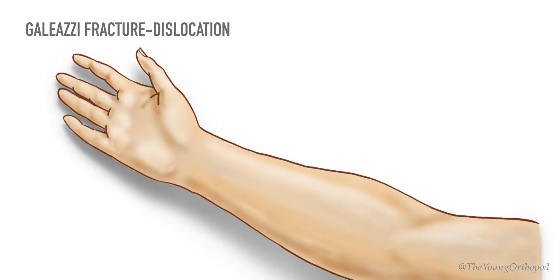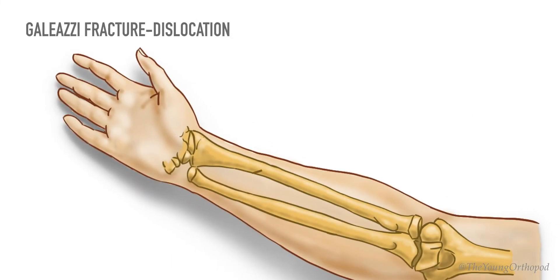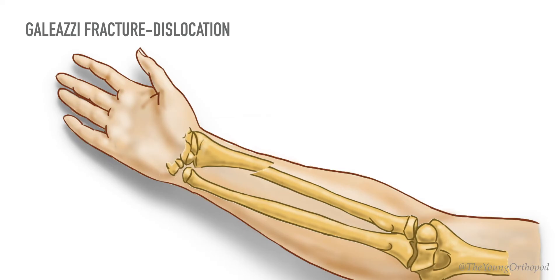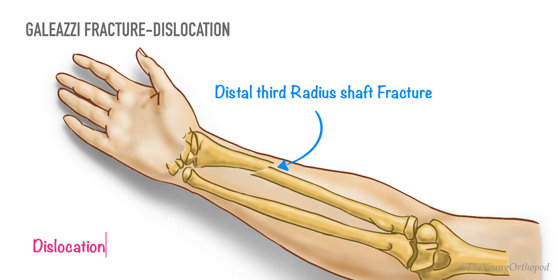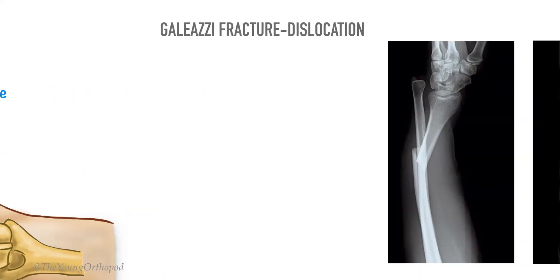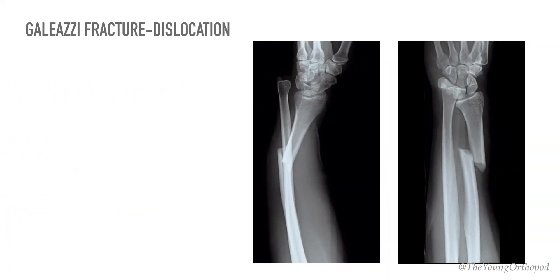Galeazzi fracture-dislocation is defined as a fracture of the distal third of the radius shaft with subluxation or dislocation of the distal radio-ulnar joint. On a forearm x-ray you can appreciate the fracture of the distal third of the radius shaft with dislocation of the distal radio-ulnar joint.